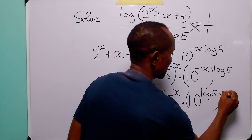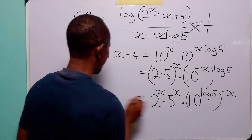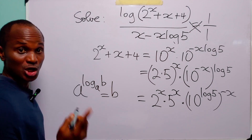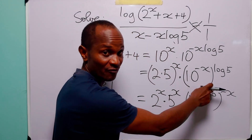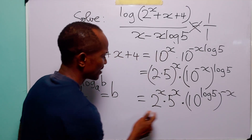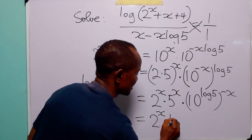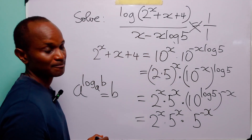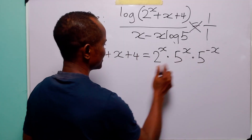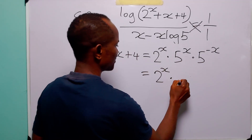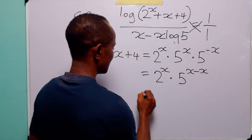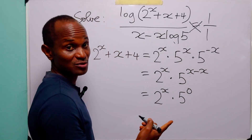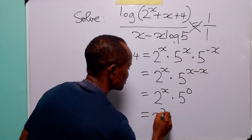Remember that when we have a to the power log base a of b, this is equal to b. So 10 to the power log base 10 of 5 is equal to 5. Therefore the right-hand side becomes 2 to the power x multiplied by 5 to the power x multiplied by 5 to the power minus x. Combining the terms with the same base, we get 2 to the power x multiplied by 5 to the power x minus x, which is 5 to the power 0. Since anything raised to power 0 is 1, this simplifies to 2 to the power x.